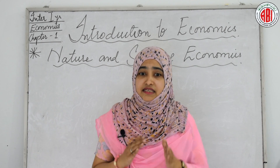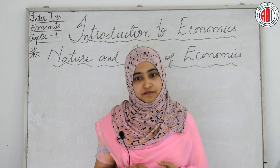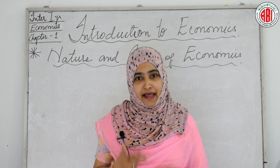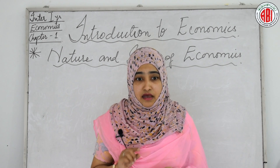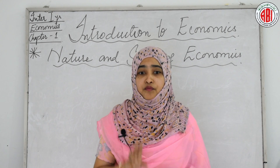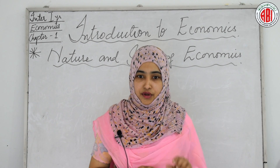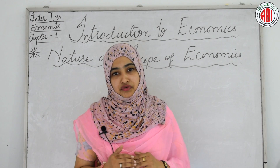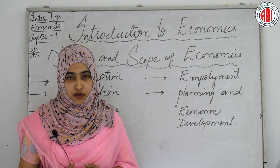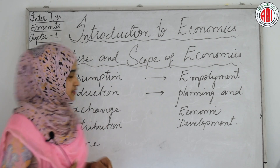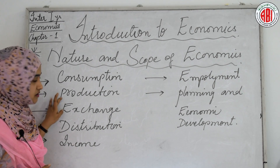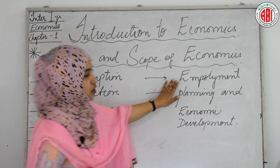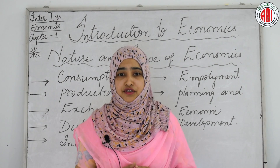The scope of any science explains what that science is concerned with. In economics, traditional economic theory is divided into various branches like consumption, production, exchange, distribution, income, employment, planning, and development. Modern economic theory is divided into two branches: microeconomics and macroeconomics.